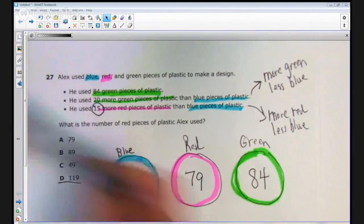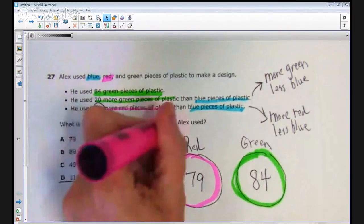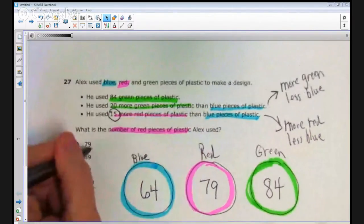But let's go ahead and answer the question. What is the number of red pieces of plastic that Alex used? And that answer is answer choice A.